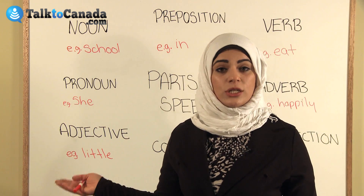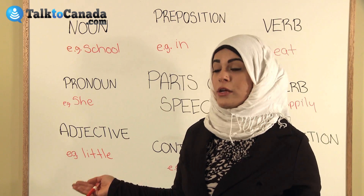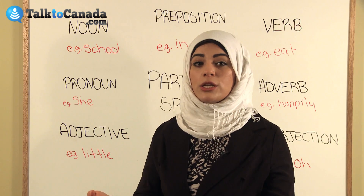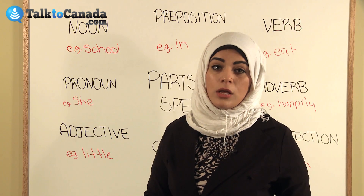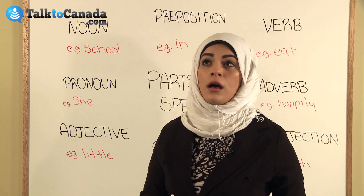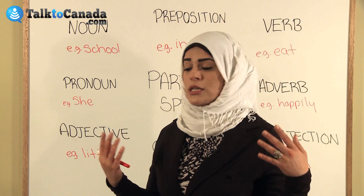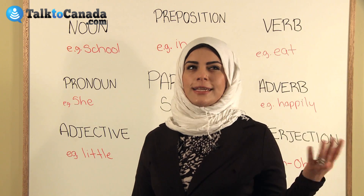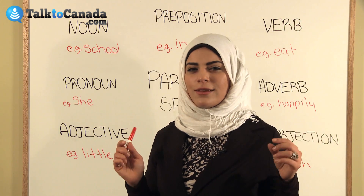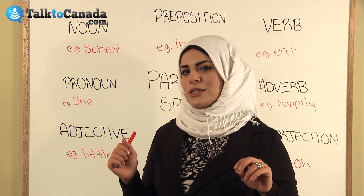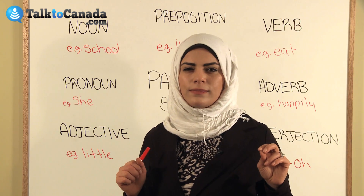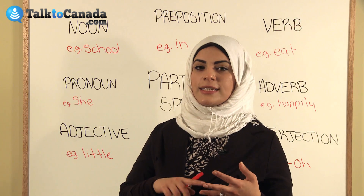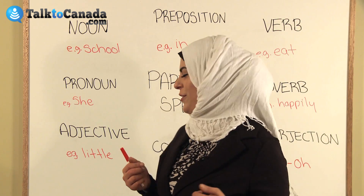Next we're going to talk about an adjective. An adjective is also very closely related to the noun — it's a word that gives more information about a noun or a pronoun. Adjectives include colors, sizes, and shapes. An example is little. I'll give you a sentence: The little girl went into the yellow bus. The answer is little and yellow — both words tell you more information about a noun.